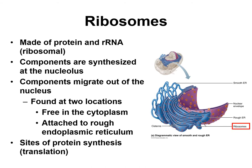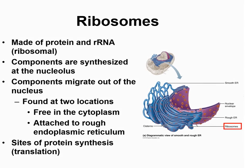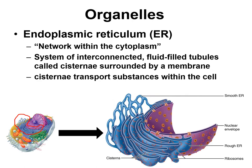The function of ribosomes is protein synthesis — where amino acids are connected to one another to make protein, a process called translation. Typically, ribosomes free in the cytoplasm produce proteins that will remain in the cell, while ribosomes attached to the rough endoplasmic reticulum produce proteins that are going to be packaged and exported out of the cell.